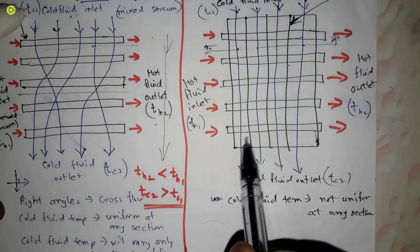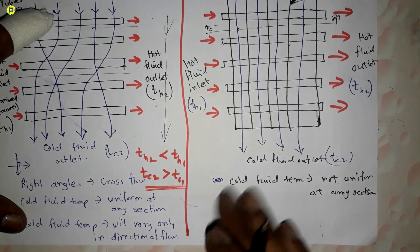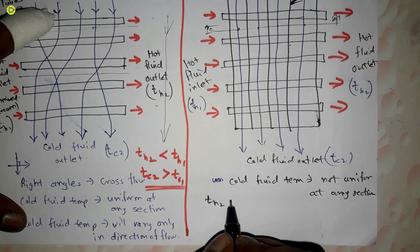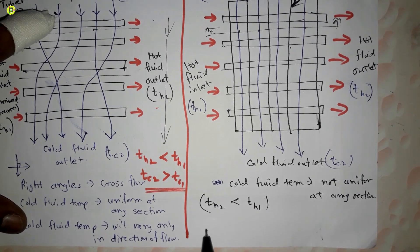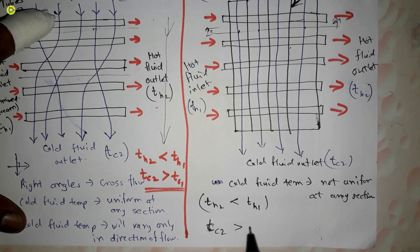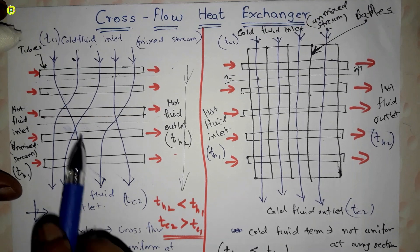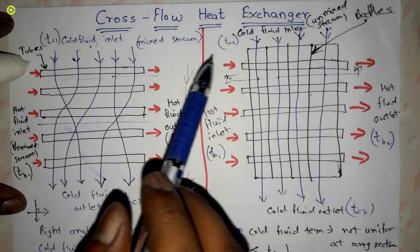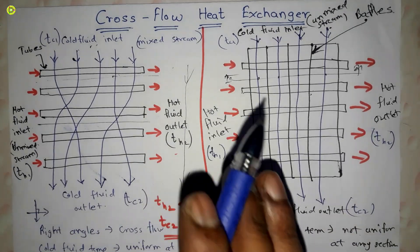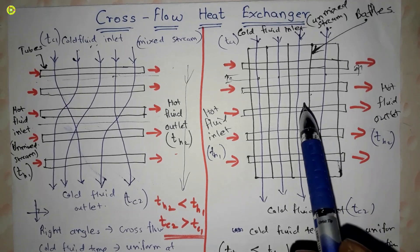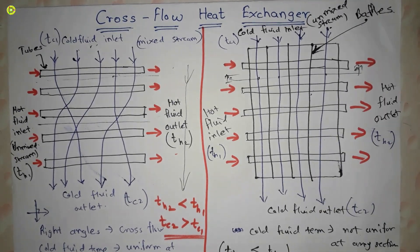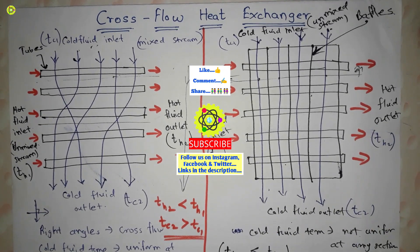In this case also, TH2 will be less than TH1 and TC2 will be greater than TC1. An example of a mixed stream cross flow heat exchanger is the cooling unit of a refrigeration system, and an example of an unmixed stream cross flow heat exchanger is an automobile radiator. In this video we have understood about cross flow heat exchangers. Thank you for watching — please like, share, comment, and subscribe to the channel.